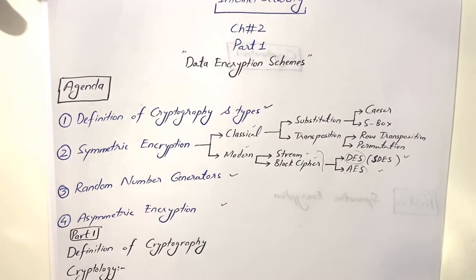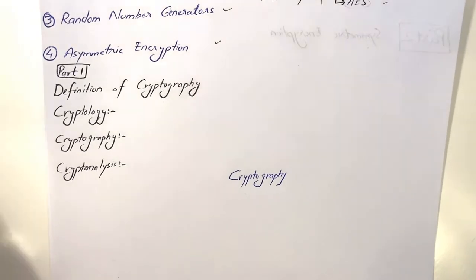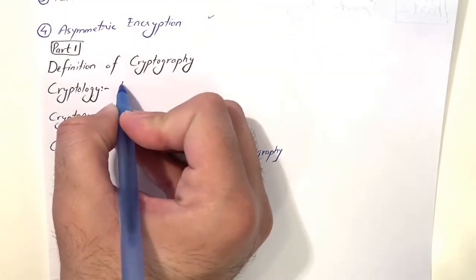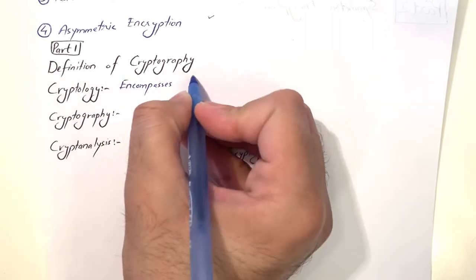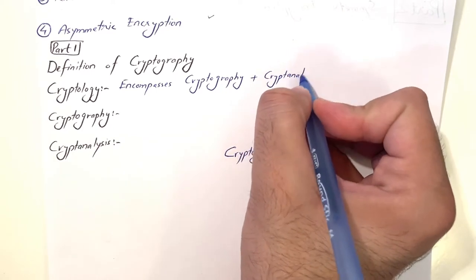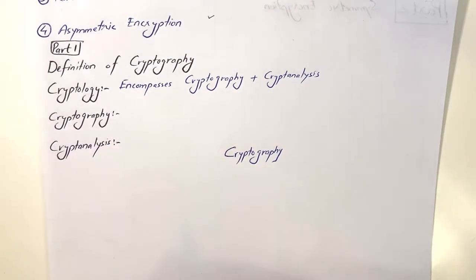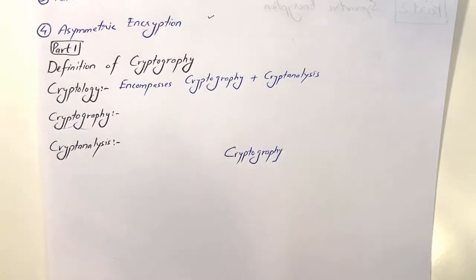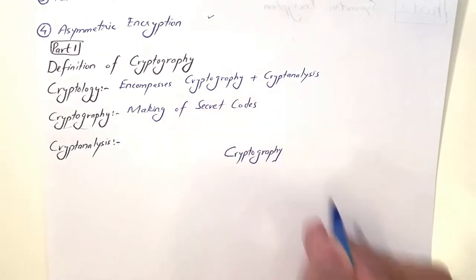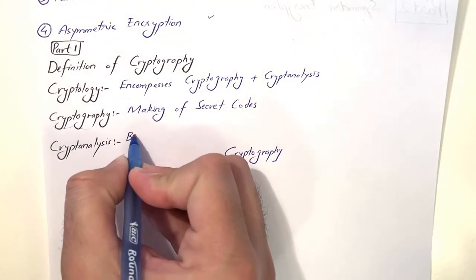Let's move to the first agenda item: definition of cryptography. The main field is cryptology, which encompasses cryptography plus cryptanalysis. The word cryptography comes from the Greek 'kryptos graphene' — 'kryptos' means secret and 'graphene' means writing. So the art of secret writing is called cryptography, or simply: making of secret codes. Cryptanalysis is the breaking of secret codes, or finding vulnerabilities in systems.